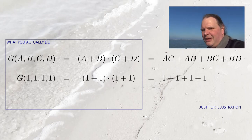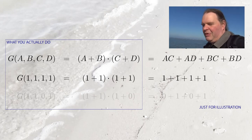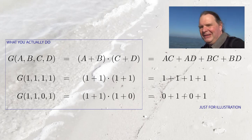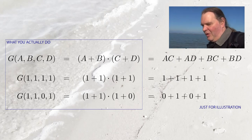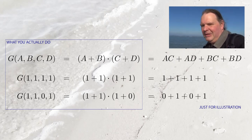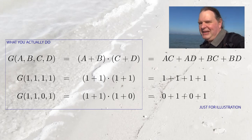We can also ask: how many of these outcomes do not contain a c? Very simple — we just set c to 0 instead of 1, and all the terms that contain a c will be 0. So this counts the number of outcomes that don't contain any c.